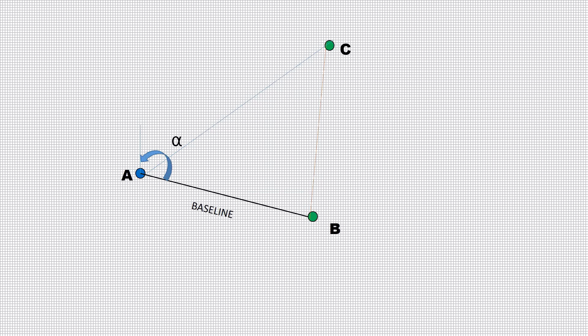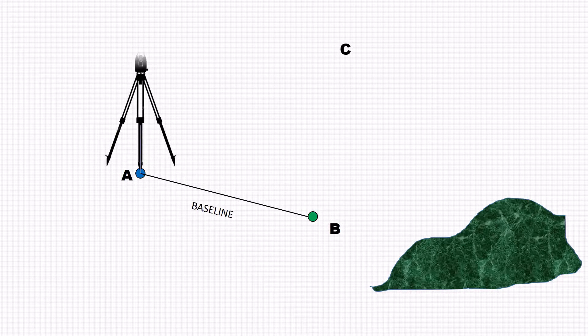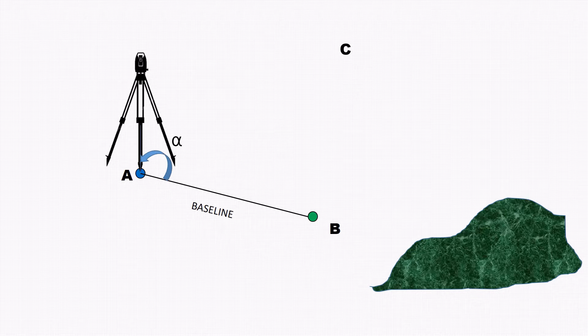Once the line AB and the azimuth alpha is determined, the distance AC and BC is measured using a total station. We take both forward and backward measurements for having proper check and accuracy.